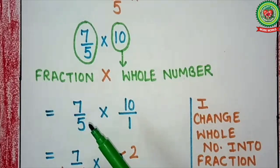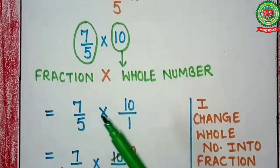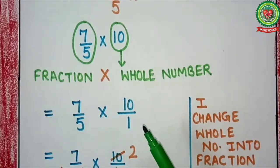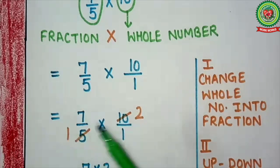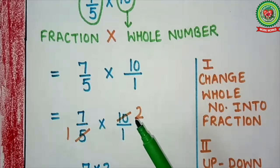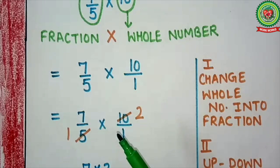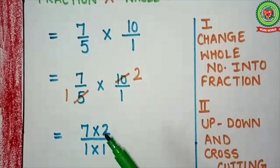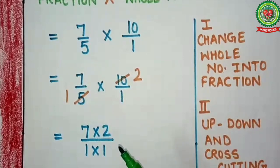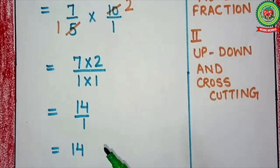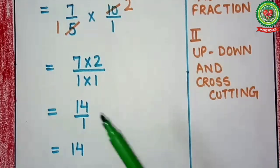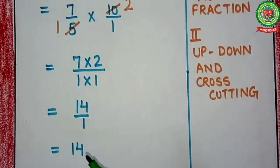Here cutting of 7 and 5 is not possible, and we will not check by 1. But see, cutting of 5 and 10 is possible. So we will cut 5 and 10 — 5 ones are 5, 5 twos are 10. Now Step 3: multiply numerator by numerator and denominator by denominator. So it will come 7 multiplied by 2 upon 1 multiplied by 1. 7 twos are 14, so it will come 14 upon 1. If the denominator is 1, the number remains the same. So the answer is 14.